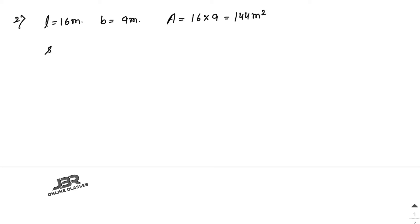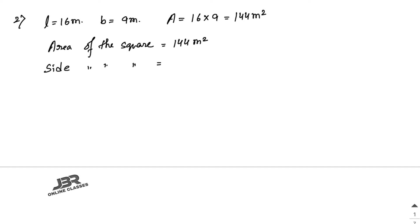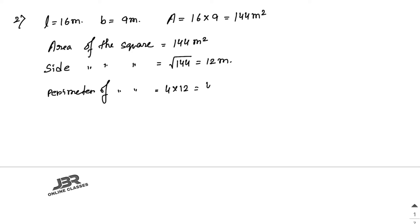The area of the square is equal to the area of the rectangle, which is 144 square meters. So the side of the square equals the square root of 144, which is 12 meters. The perimeter of the square equals 4 times the side, so 4 into 12 equals 48 meters.